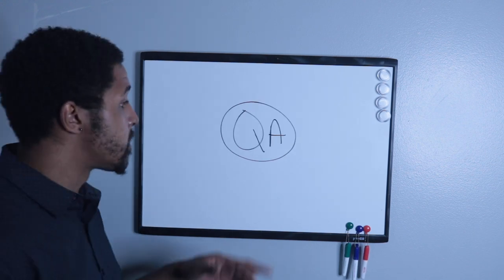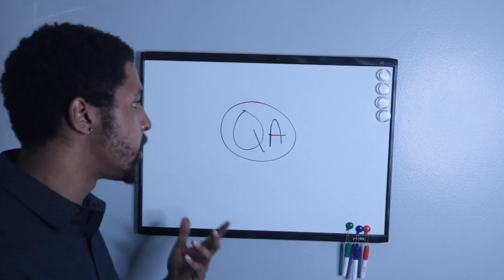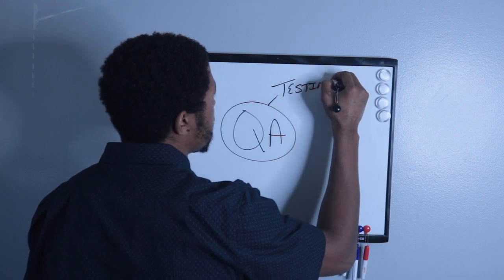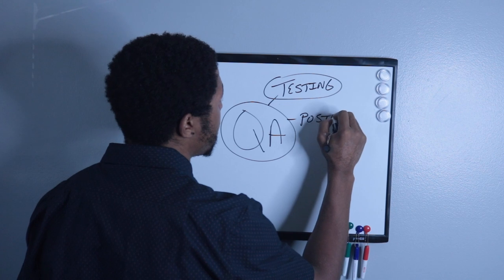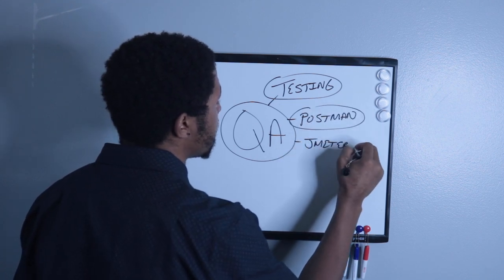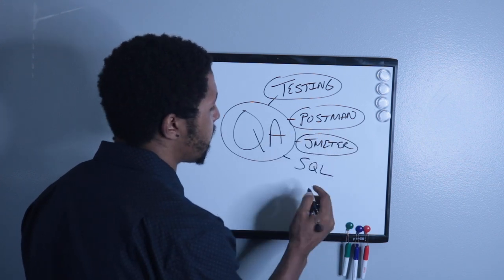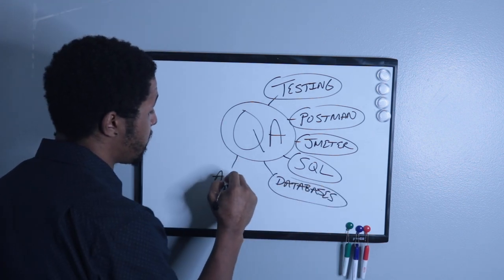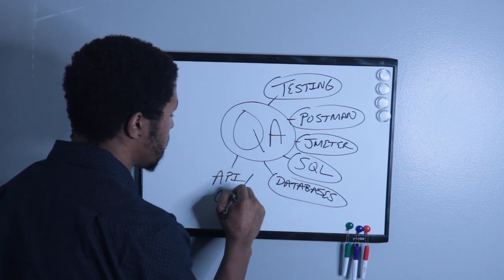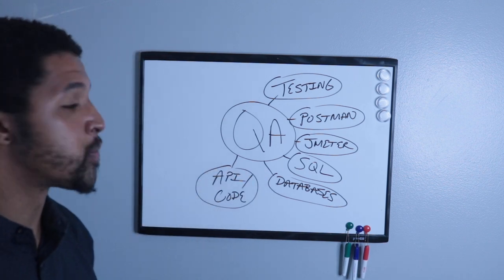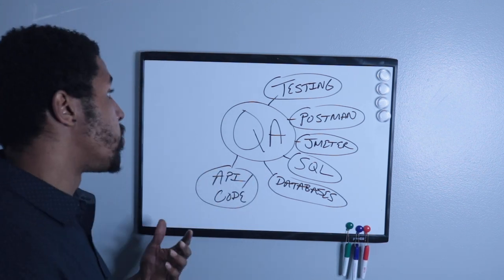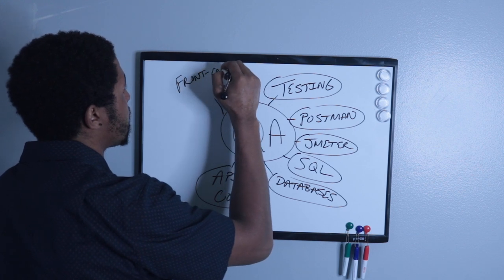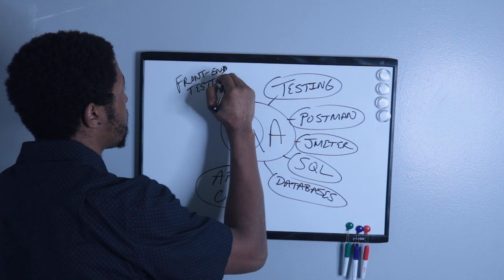Next up is the QA role — Quality Analyst or Quality Assurance. This person is responsible for all things related to testing. Tools they might use include Postman, JMeter, SQL, and databases in general. They're also going to be familiar with APIs and code in general, so they're very technical or at least very comfortable in a technical setting. They may also have to do front-end testing.